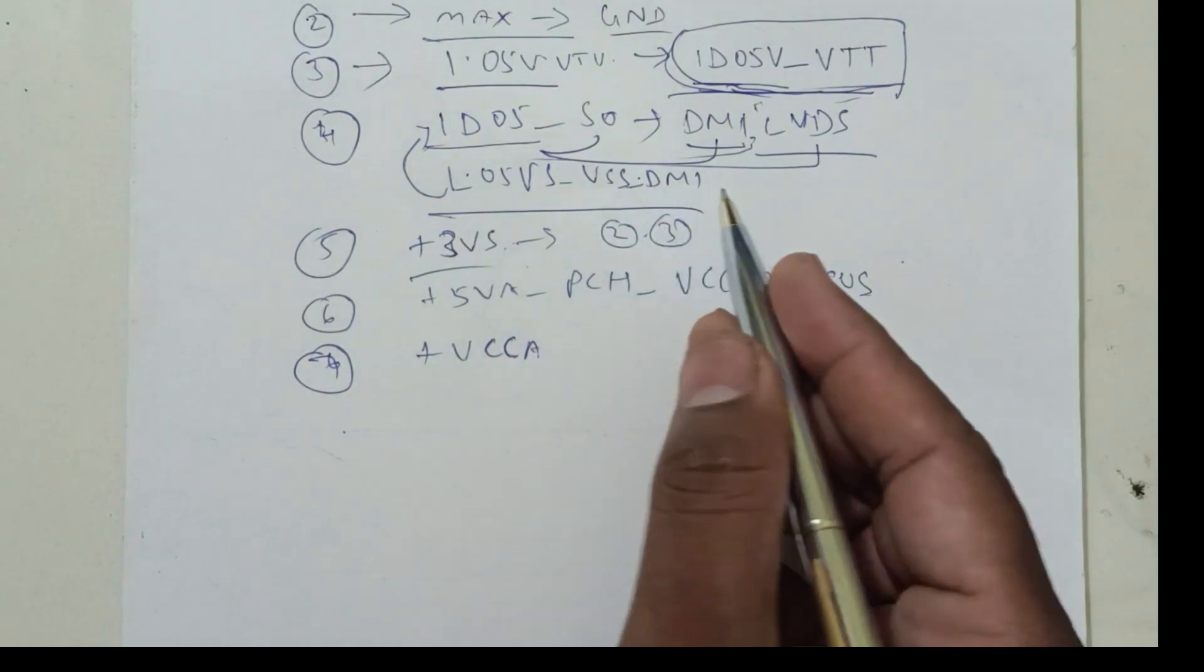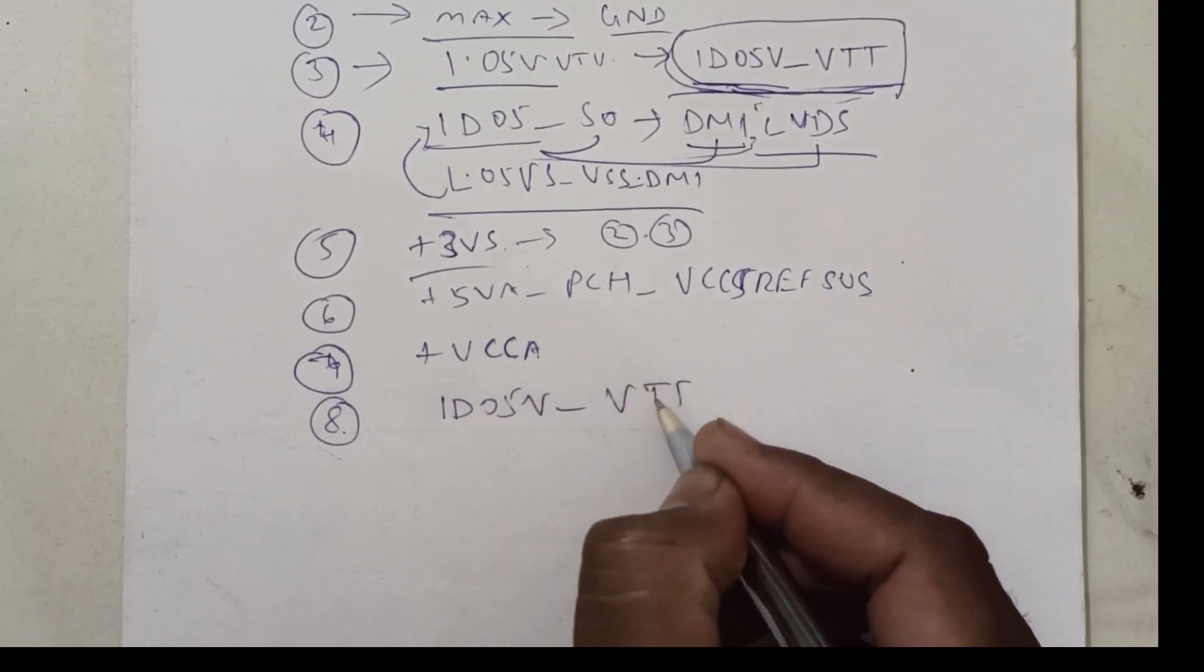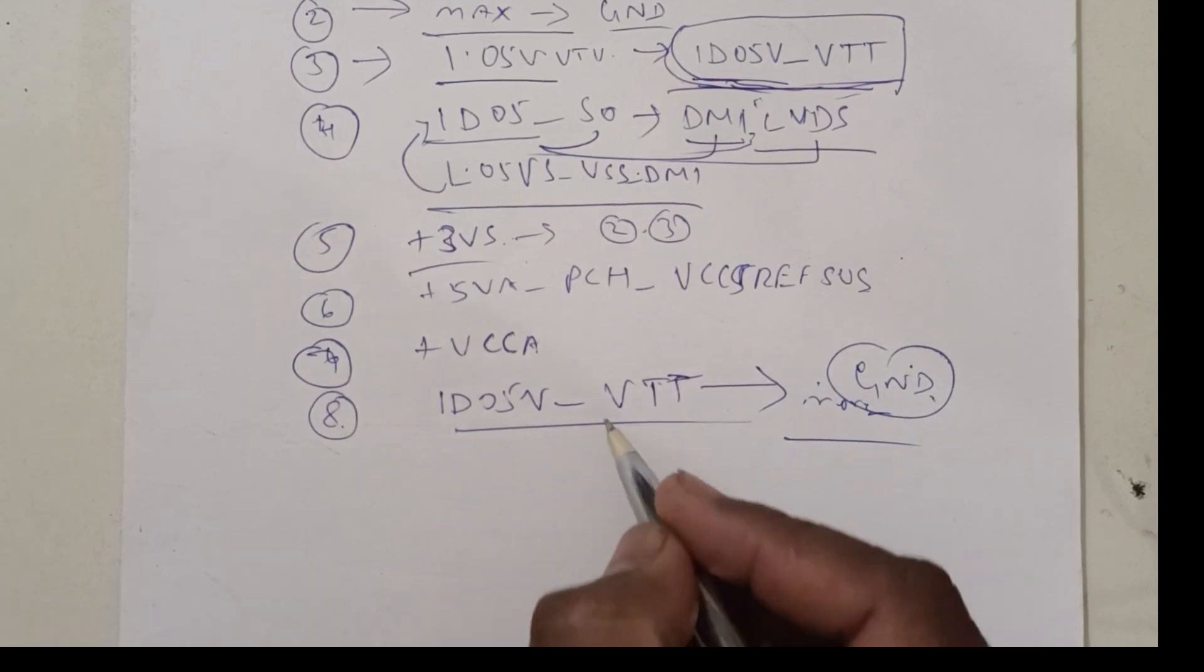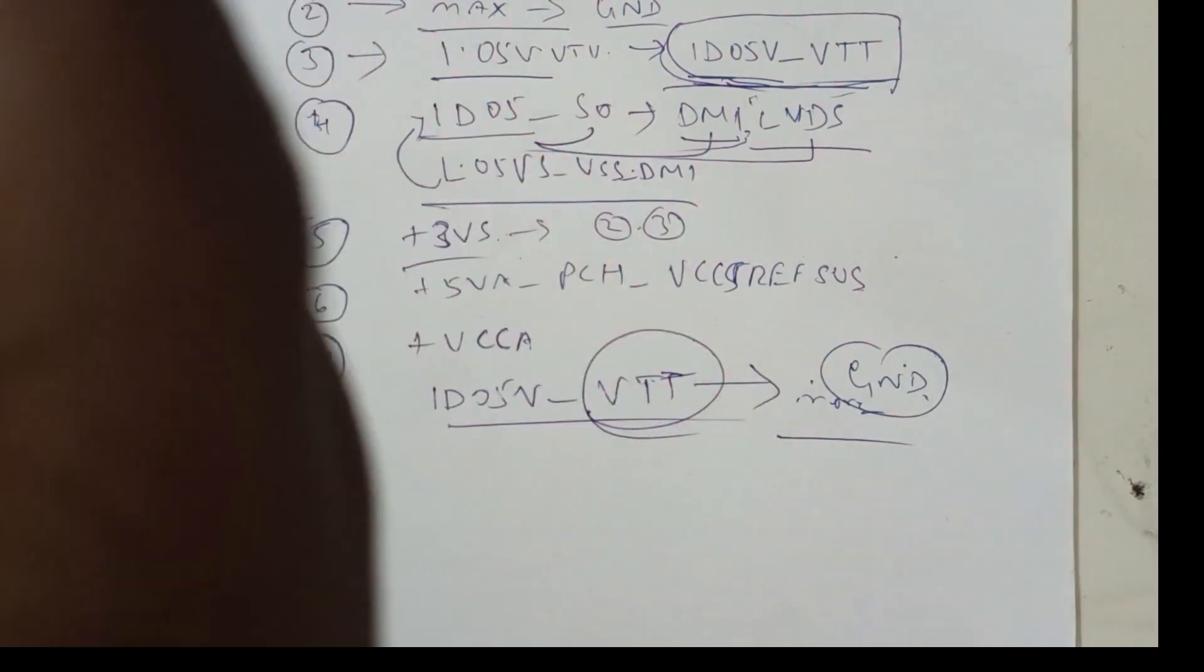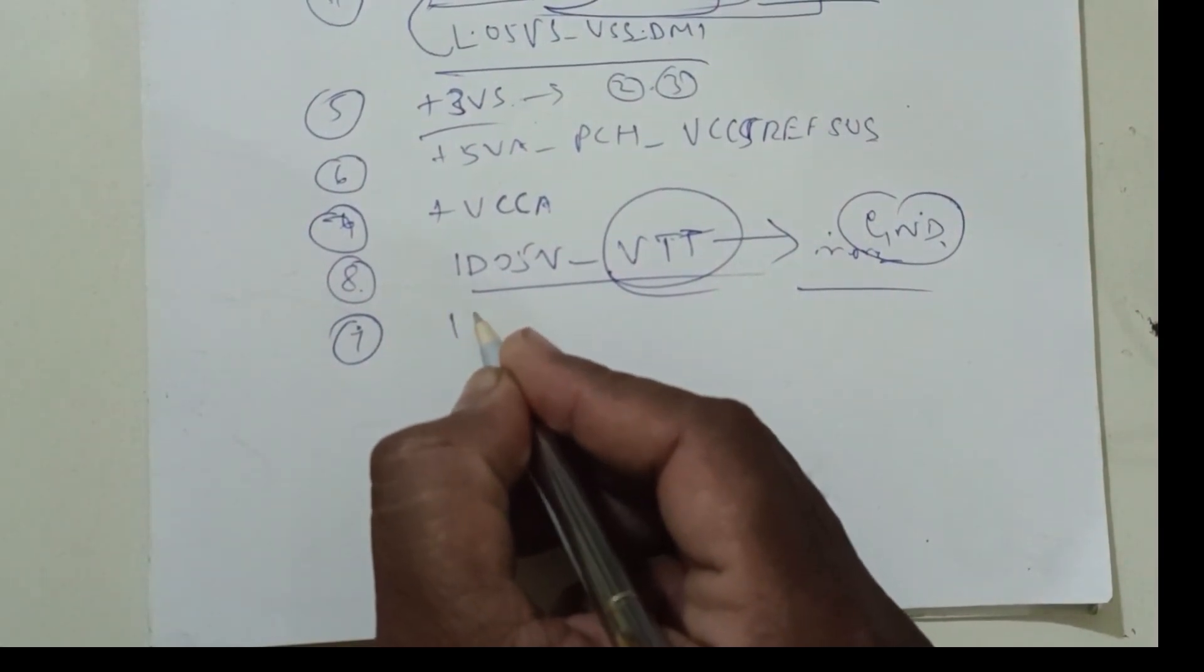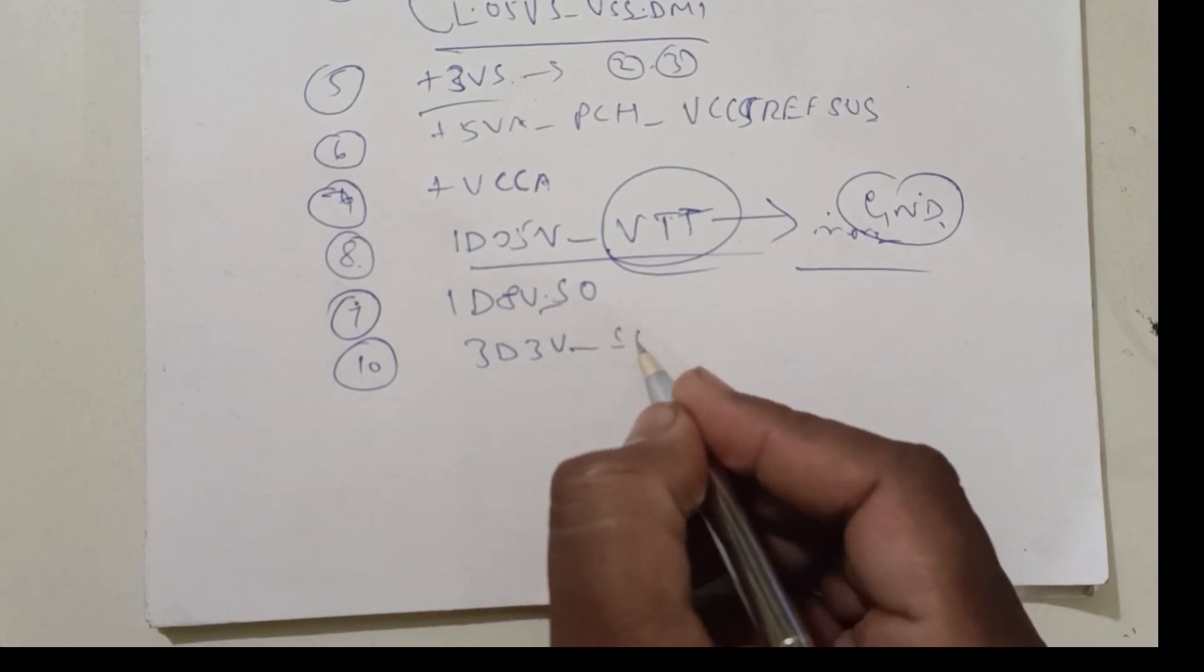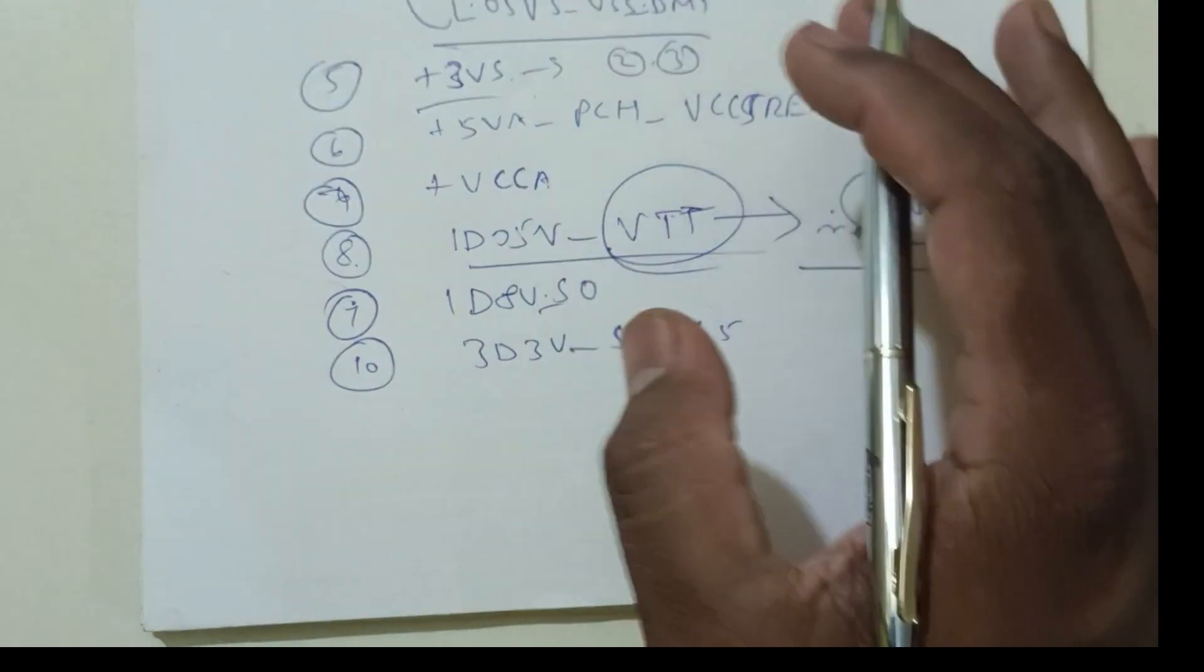Other than that, maximum pin is plus 1D05 volts underscore VTT. This is the maximum, equaling to ground. More number of pins we will get 1.05 volts VTT. This VTT voltage we will get. Other than that, ninth one, what we will get? 1D8 volts S0. Tenth one, 3D3V underscore S0 and S5. These are the common voltages we will get in PCH.